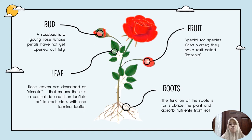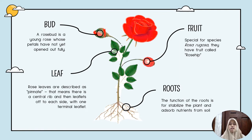The next part of the rose is the leaf. Rose leaves are described as pinnate, which means there is a central rib and then leaflets off to each side with one terminal leaflet. The last part of the rose is the root. The function of the root is to stabilize the plant and absorb nutrients from the soil.